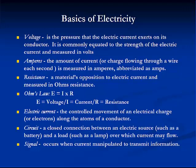Resistance is a material's opposition to electric current flow and measured in ohms. If two of these characteristics are known, the third can be calculated using Ohm's law, which states that the amount of current flowing in an electrical circuit is directly proportional to voltage and inversely proportional to resistance.